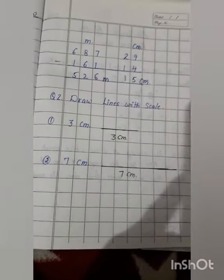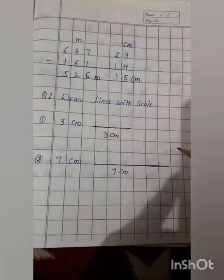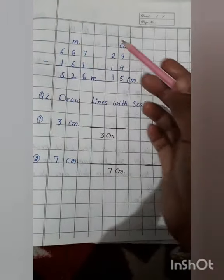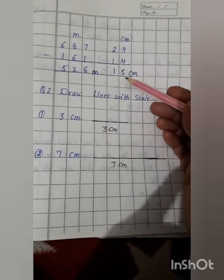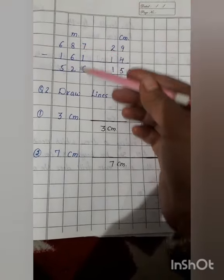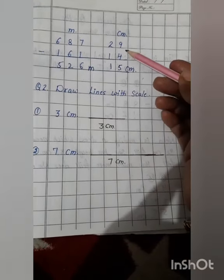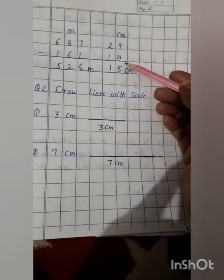First question here, also we are given 2 column, meter and centimeter. Centimeter को हम centimeter से subtract करेंगे और meter को हम meter से. See here, from 9, we will subtract 4.